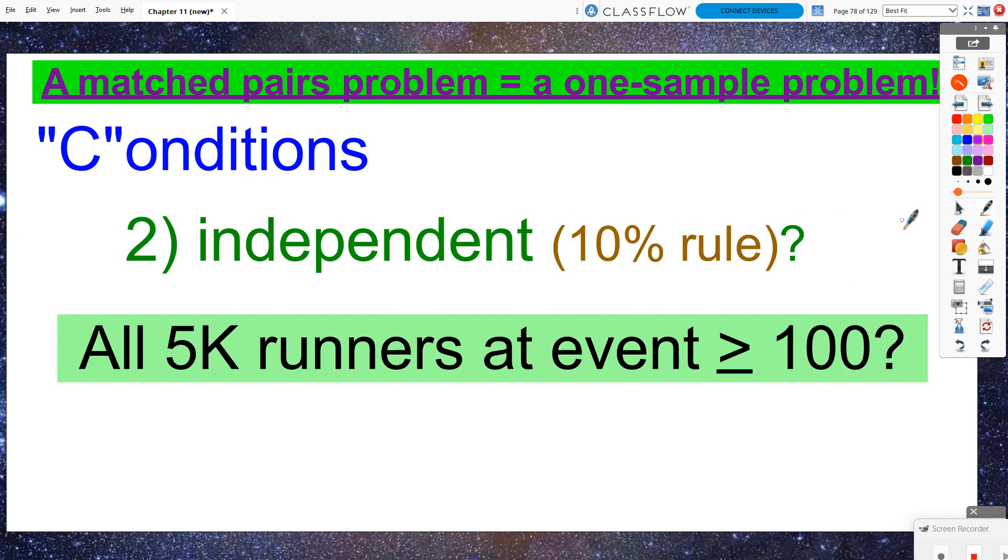What about the independent or the 10% condition? Are there at least a hundred runners at this 5K charity event? I would go out on a limb and say this is probably true. If it's some sort of charity event, I would usually expect there to be a hundred people that are raising money for this good cause.